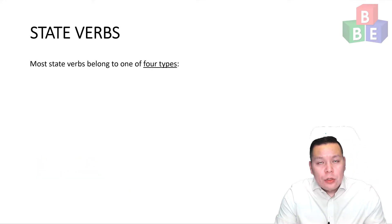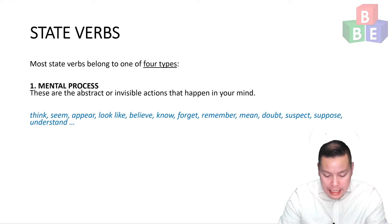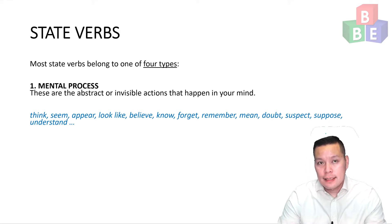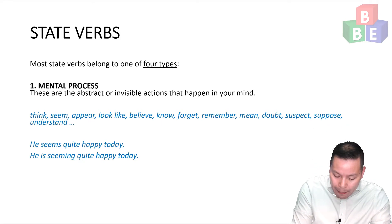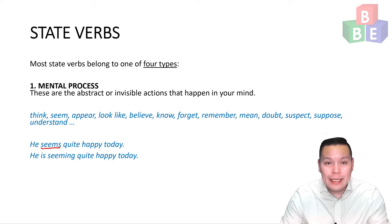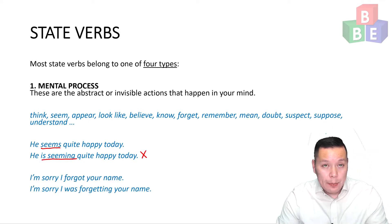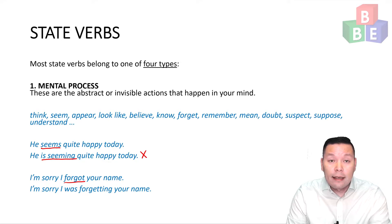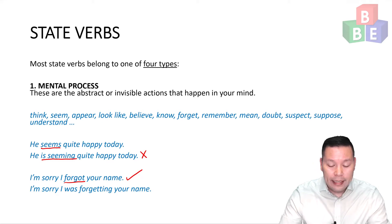Most state verbs belong to one of four groups. The first group is mental process — abstract or invisible actions that take place in your mind. For example, think, seem, appear. An example sentence: He seems quite happy today. It is incorrect to say he is seeming quite happy today. Another example: I'm sorry, I forgot your name — forgot is a state verb, this is correct. But I am sorry, I was forgetting your name — this is incorrect.